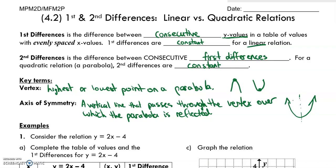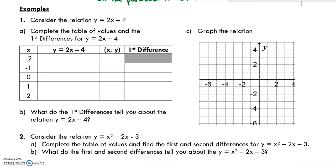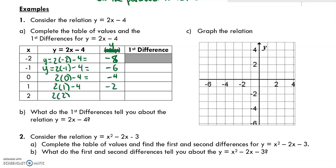Let's look at some examples. The first example says: consider the relation y equals 2x minus 4. Complete the table of values and the first differences. This is something we graphed in grade 9. If we put negative 2 in, we get 2 times negative 2 minus 4, which is negative 4 minus 4, which is negative 8. Putting in negative 1 gives 2 times negative 1 minus 4, which is negative 2 minus 4, which is negative 6. Continuing: 0 gives negative 4; 1 gives negative 2; and 2 gives 0.